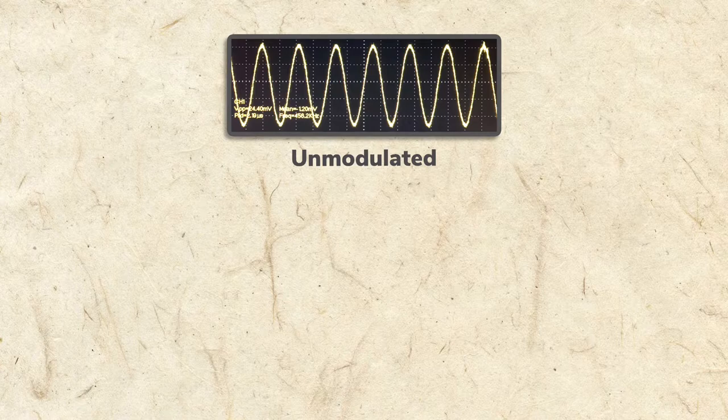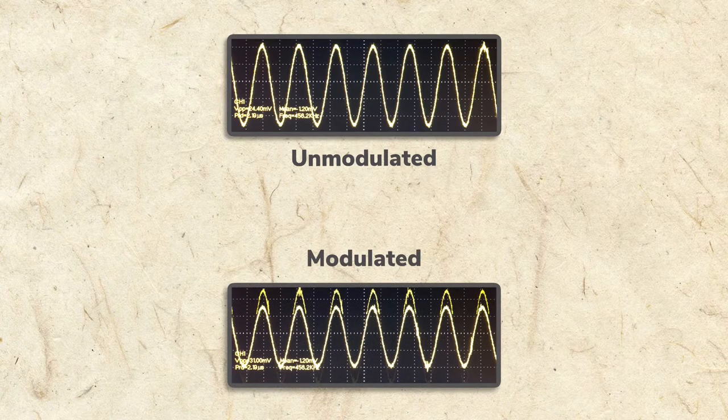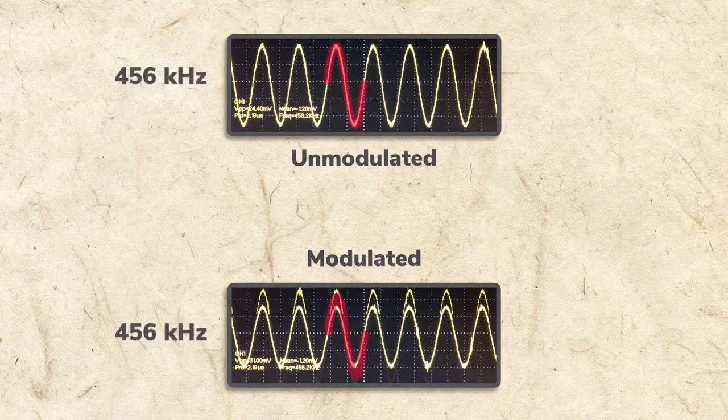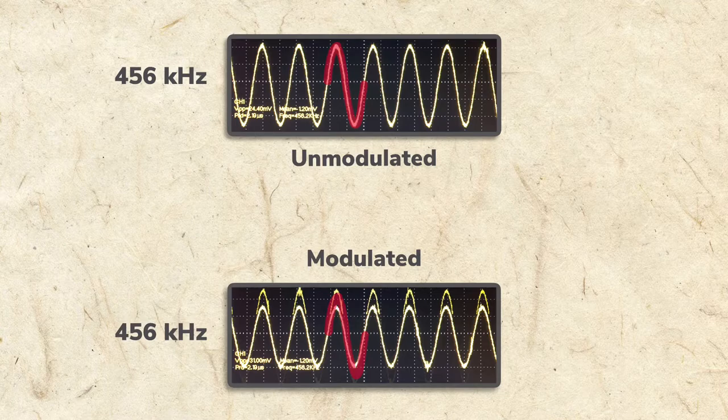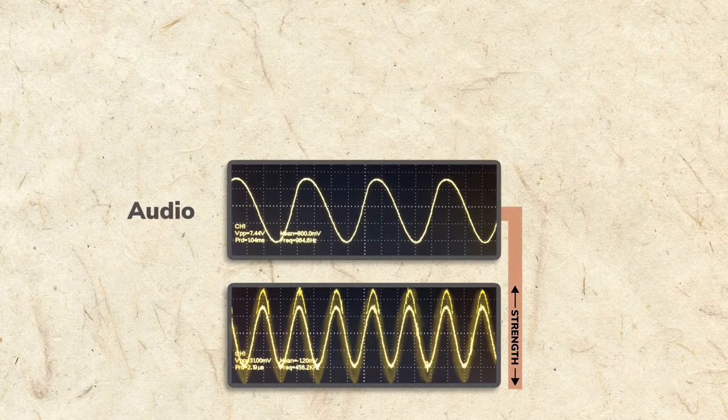Compare the unmodulated IF signal with no audio, with the same signal with modulated audio. The width of the signal hasn't changed because the frequency is still 456 kHz, but the amplitude is now going up and down in relation to the audio signal.